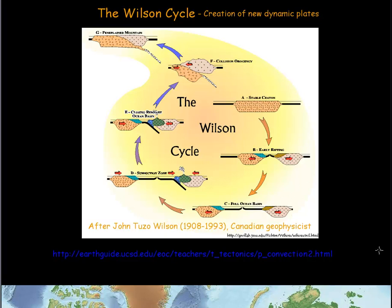Hello, what I'm going to try to do today is go over something called the Wilson Cycle. This was an idea of the way the earth created new crust, new oceans, by John Tuzzo Wilson, back in the 1980s. He was a Canadian geophysicist — you can see he's no longer with us — but we still call it after him the Wilson Cycle.